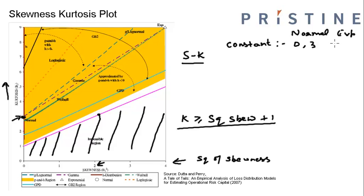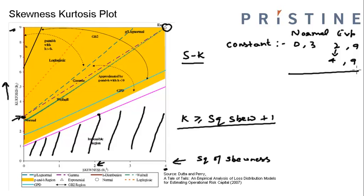And exponential distribution has a skewness of 2, therefore a squared skewness of 4 and kurtosis of 9. So on the chart we will see that at (4, 9) the exponential distribution lies. These distributions are the least flexible in fitting different types of data sets — they can fit only those data sets which have a skewness kurtosis combination equal to theirs.